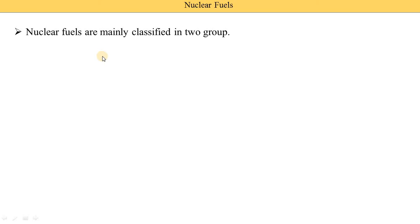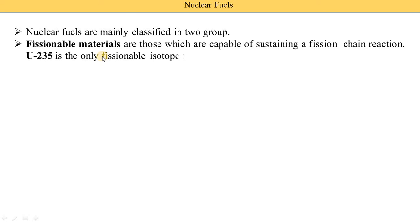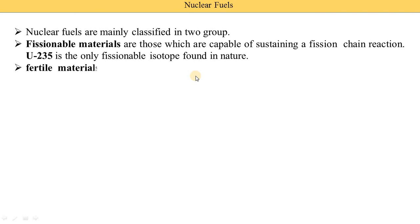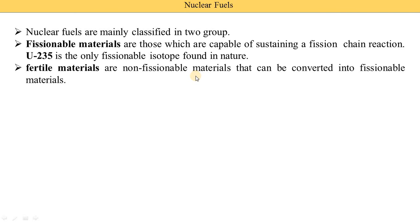Nuclear fuels are mainly classified into two groups. The first is fissionable materials — those which are capable of sustaining a fission chain reaction. Only one fissionable isotope is found in nature: Uranium-235. The other group is called fertile materials, which are non-fissionable materials that can be converted into fissionable materials.